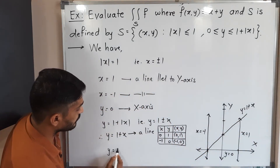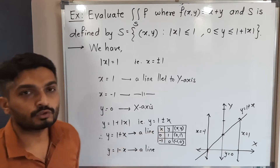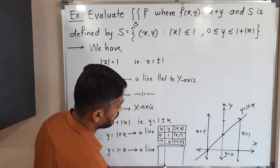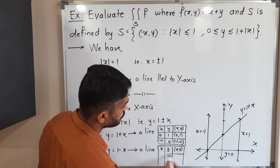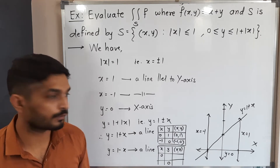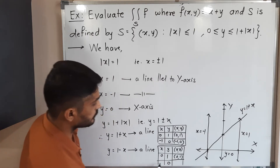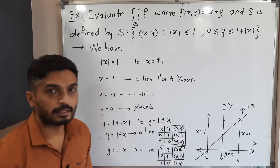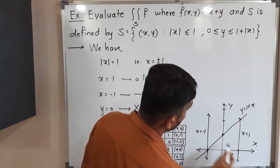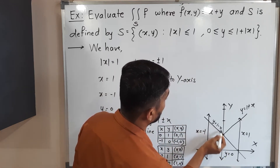The second line is Y equal to 1 minus X, again a line since powers of X and Y are both 1. Using the same table method: X equal to 0 gives Y equal to 1, so point (0, 1). Y equal to 0 gives X equal to 1, so point (1, 0). Joining these gives the line Y equal to 1 minus X.